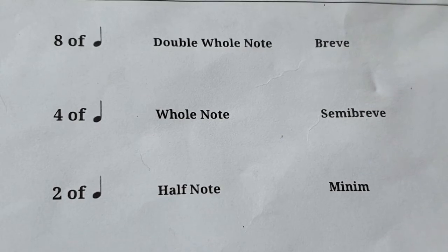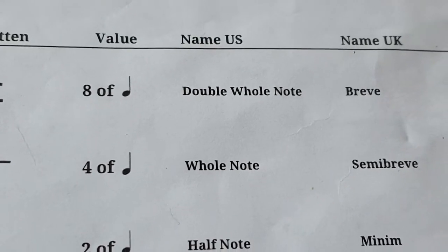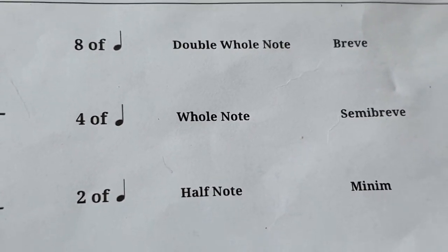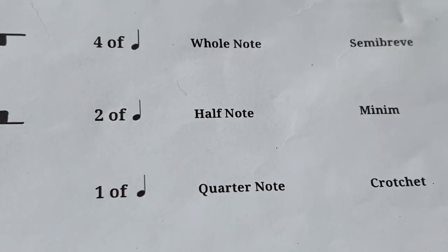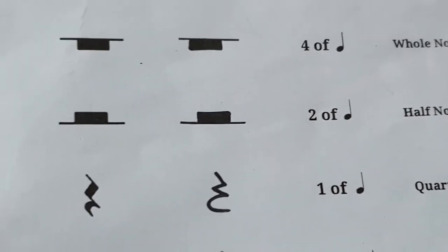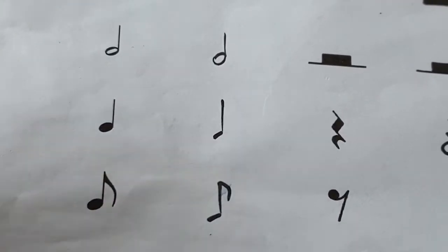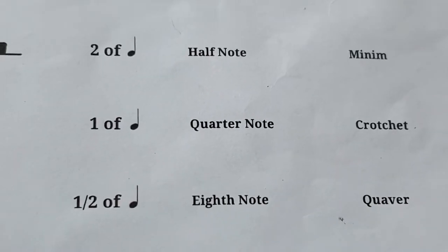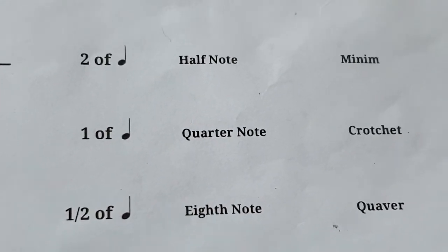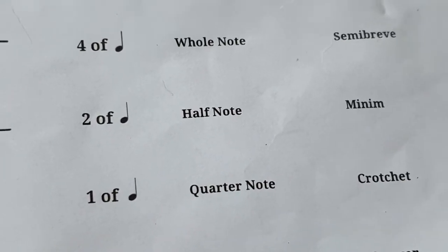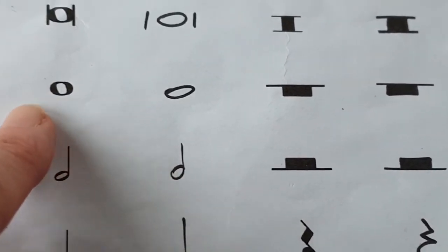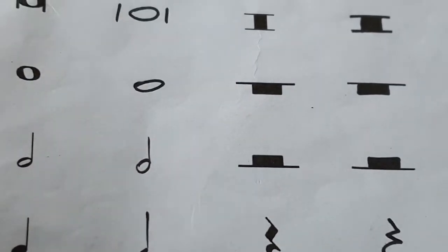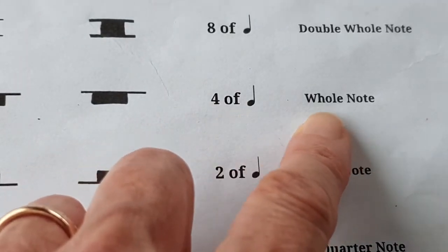In the USA and the Americas, the English names are based on the quarter note. The quarter note has a bit of logic to it: a quarter note is a quarter of a whole note, and the whole note is worth four beats, or four quarter notes, as you can see here on this guide.